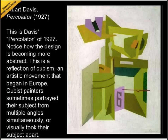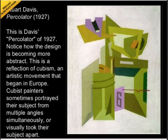This is Davis' Percolator of 1927. Notice how the design is becoming more abstract. This is a reflection of Cubism, an artistic movement that began in Europe. Cubist painters sometimes portrayed their subject from multiple angles simultaneously, or visually took their subject apart.